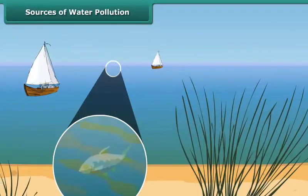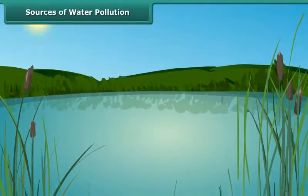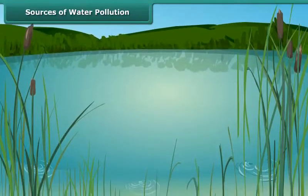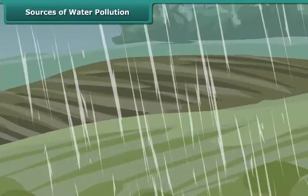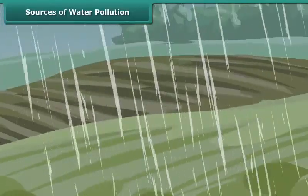Have you seen ponds which look green from a distance? This is due to algae growing in them. During rainfall, large amounts of fertilizers get washed from the fields and fall into ponds and rivers.